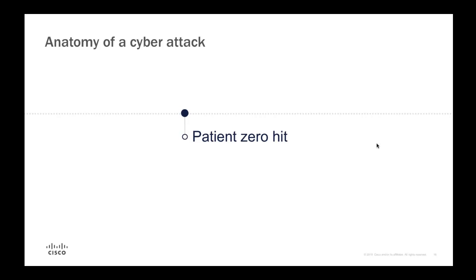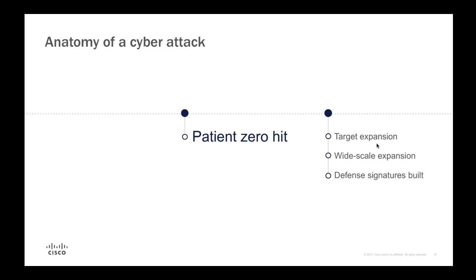Looking at the anatomy of an attack: patient zero refers to the very first machine infected with malicious code. There's a misconception that the attacker lifecycle starts with patient zero. Once patient zero is affected, the attacker does what's called a targeted expansion to a similar network segment, then a wide-scale expansion to all. Weeks later, traditional security vendors try to catch up, reverse engineer the code, create a signature, and push an update to customers.